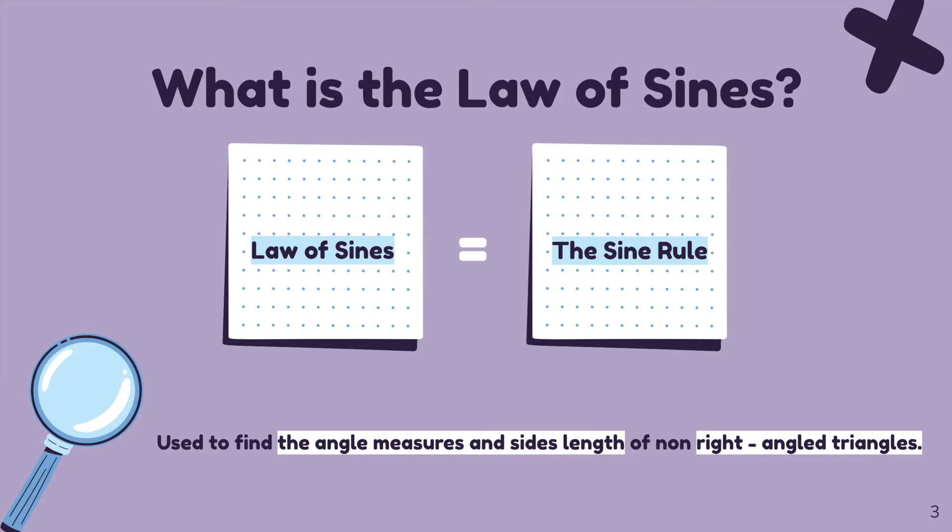The law of sines is also known as the sine rule, which might be more familiar to most students. It is used to figure out the unknown angle measures and side lengths of non-right angle triangles.